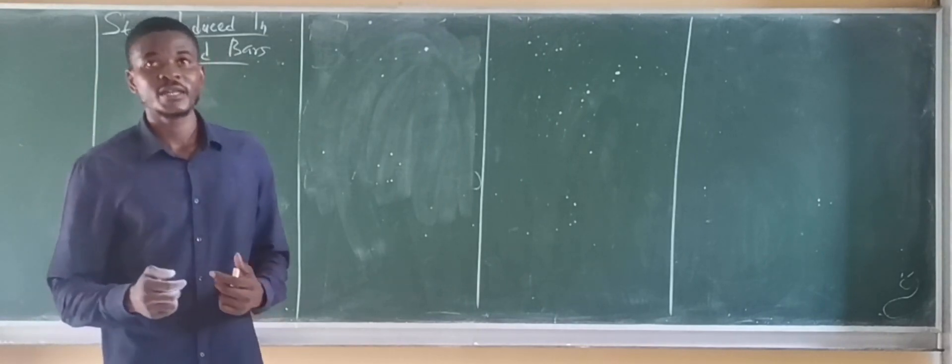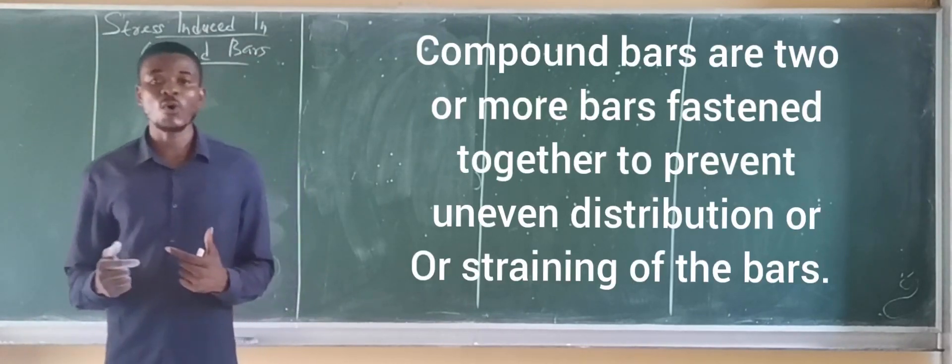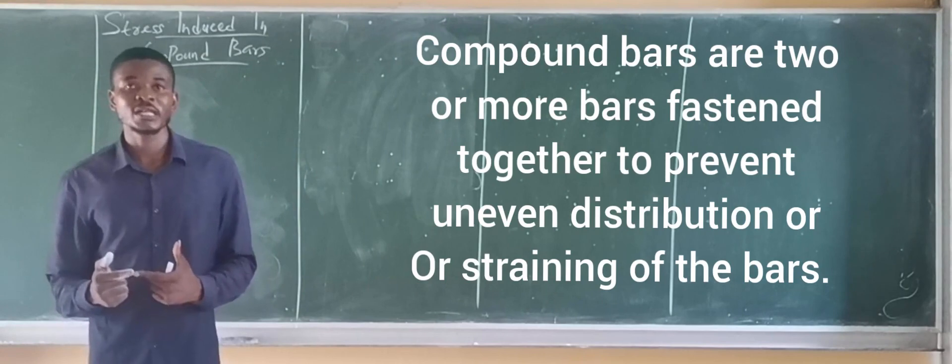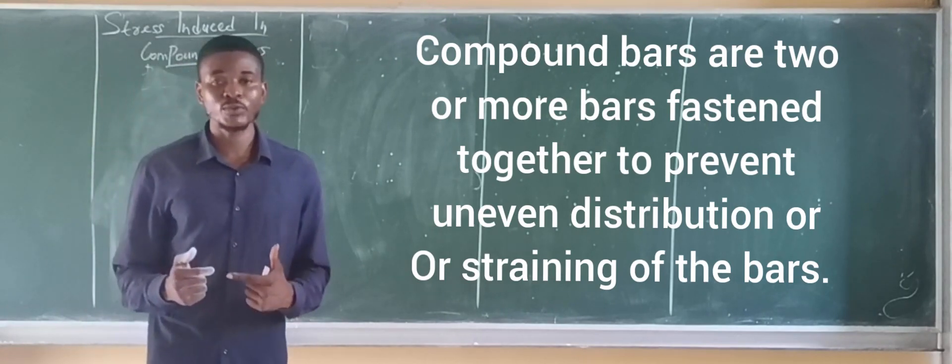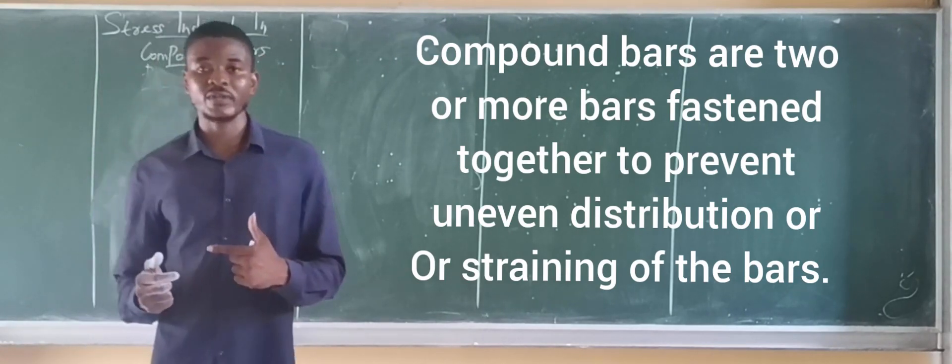What is a compound bar? A compound bar is simply two or more bars that are joined together to prevent uneven distribution of strain of the bar.